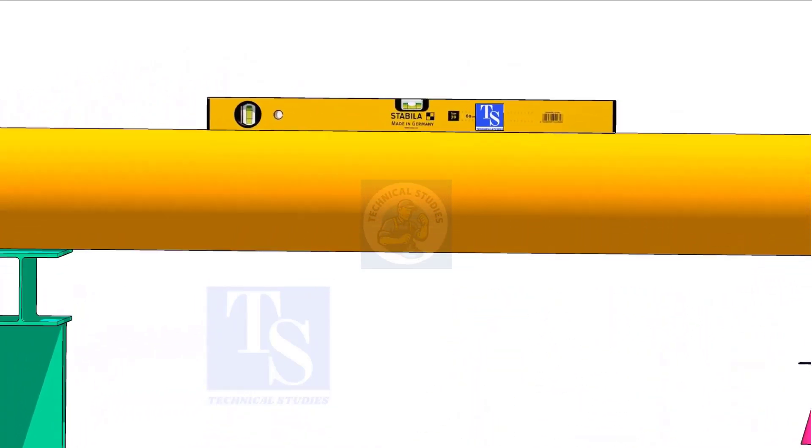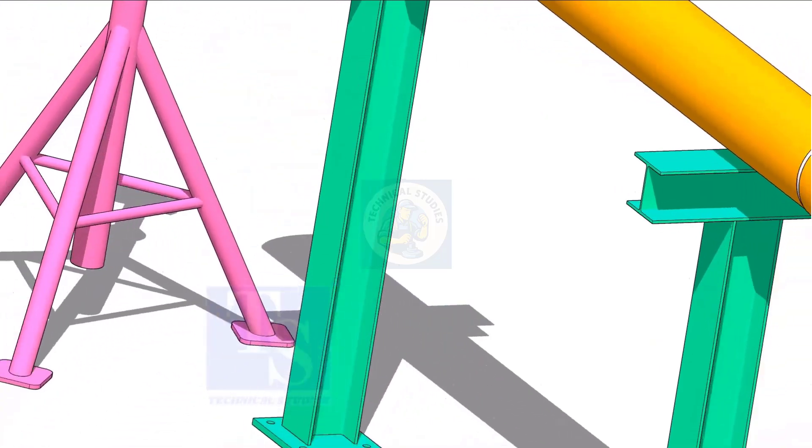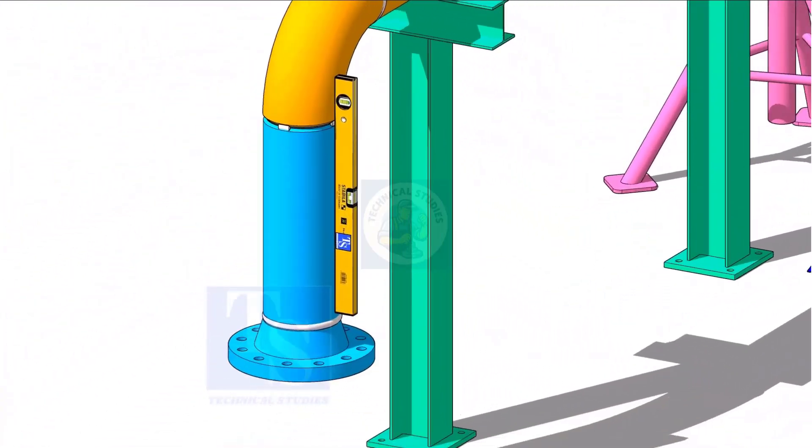Rotate spool number 2 vertically, as shown, and level the pipe. This position will ease the fit-up of spool 4.